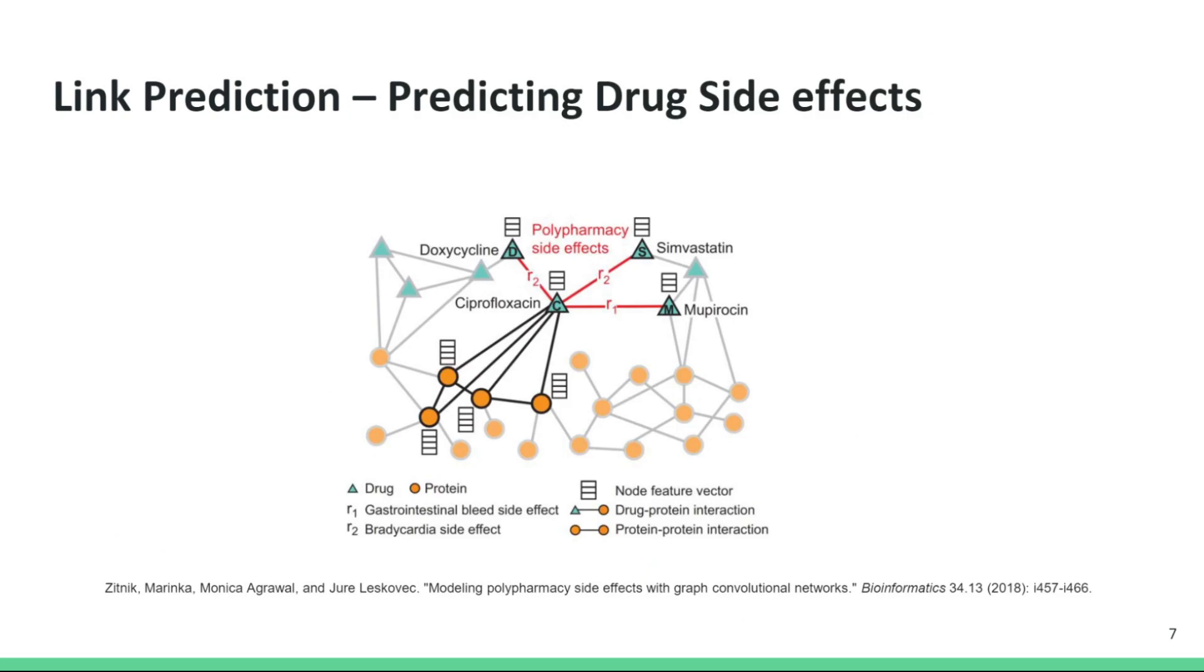An example of link prediction is predicting side effects of consuming drug pairs. What we see here is a heterogeneous graph, where nodes can either present proteins or drugs. The edges between the proteins represent the protein-protein interactions, while the edges between the drugs represent known side effects of consuming drug pairs. Finally, the edges between drug nodes and protein nodes represent drug-protein interaction. Given this information, a model can be trained to predict possible unknown side effects of drug combinations.